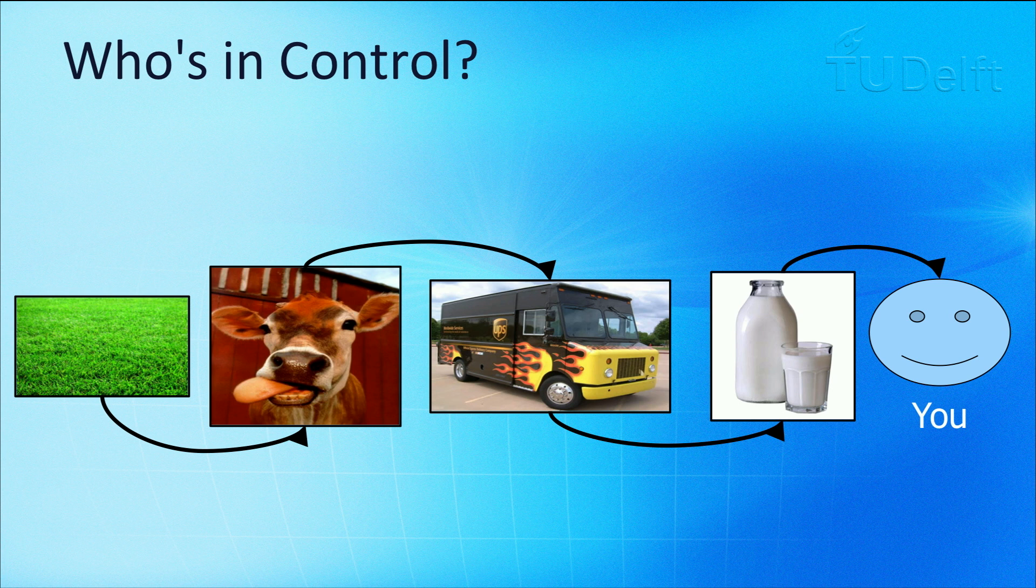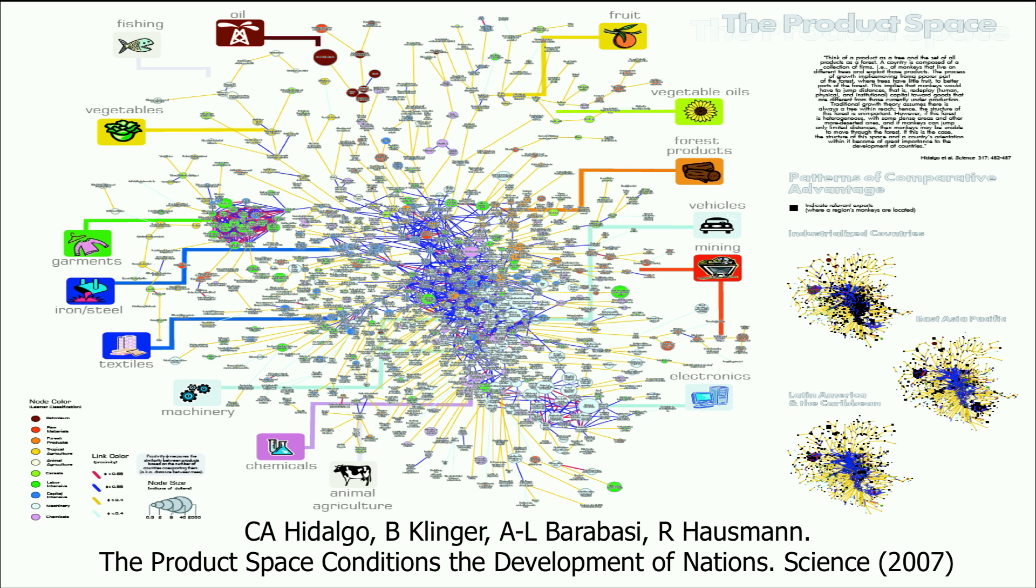In reality, these systems look a bit like what you're seeing here. What you're looking at is a network that shows the monetary flows between different industrial sectors within a single country. Each node represents an industry, such as car manufacturers and makers of wool textiles.